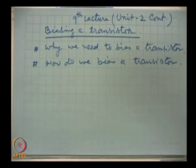Why do we need to bias a transistor? Because we want the transistor to remain in the active region. The I-V characteristics of the transistor divide the collector characteristics into three regions: the saturation region, the cutoff region, and the active region. The transistor must be operated in the active region when used as an amplifier. For an NPN transistor to work as an amplifier, the emitter junction must be forward biased and the collector junction reverse biased.